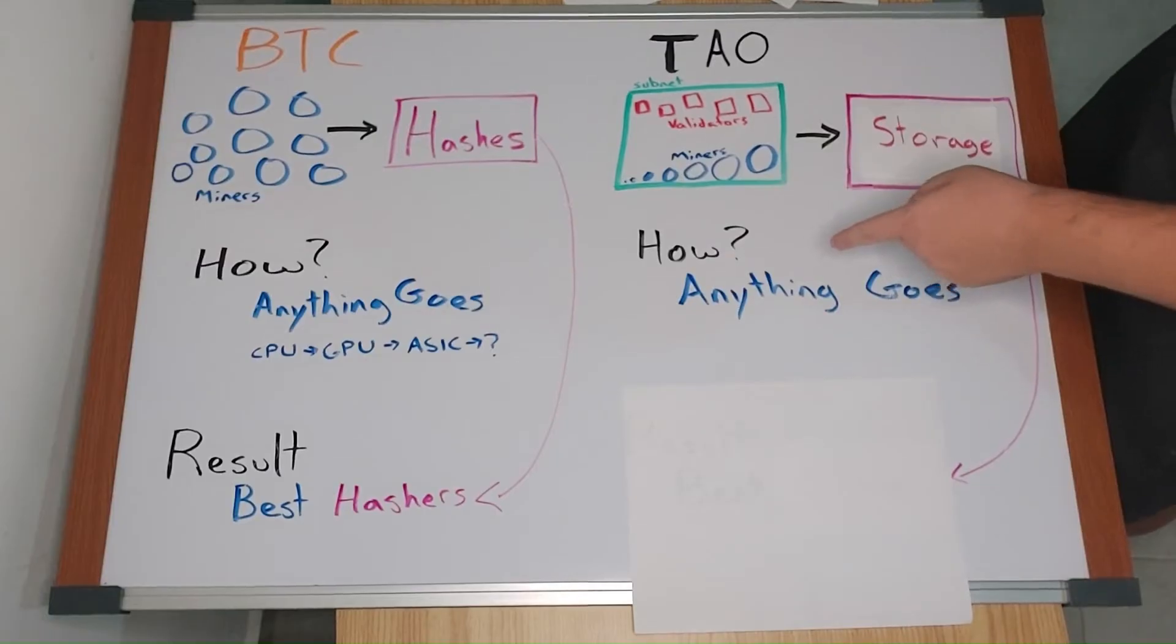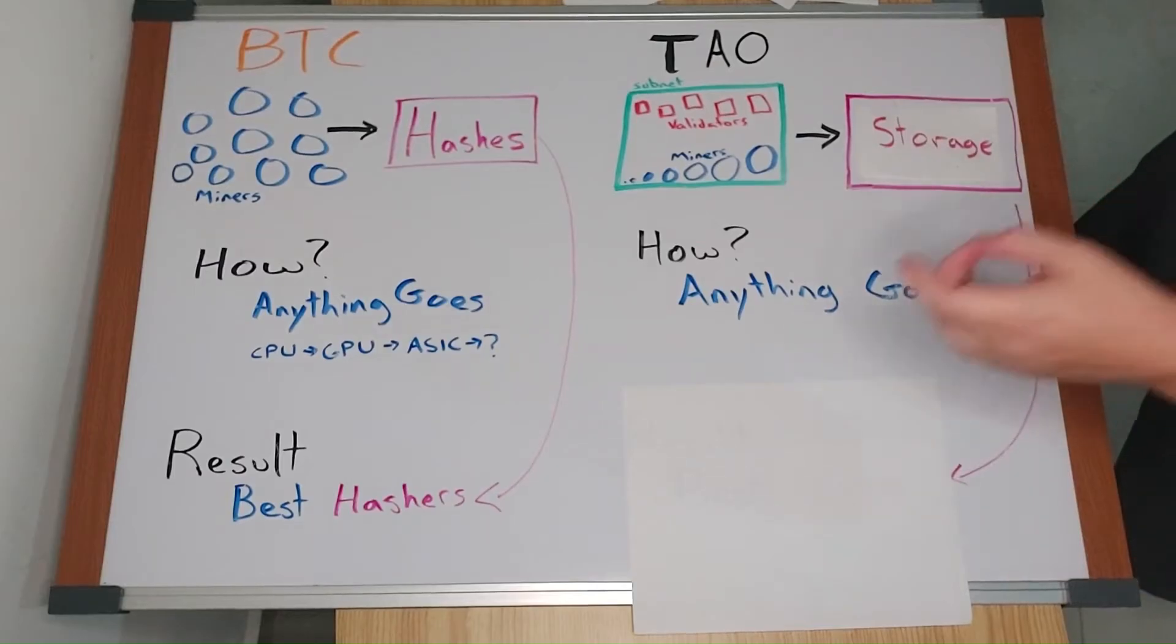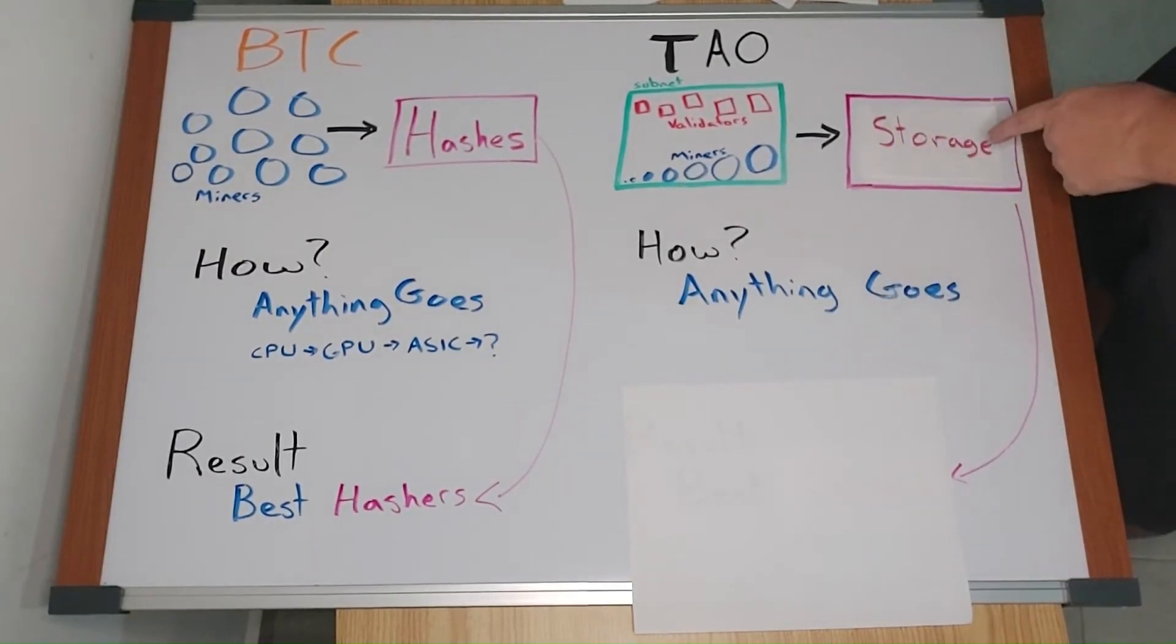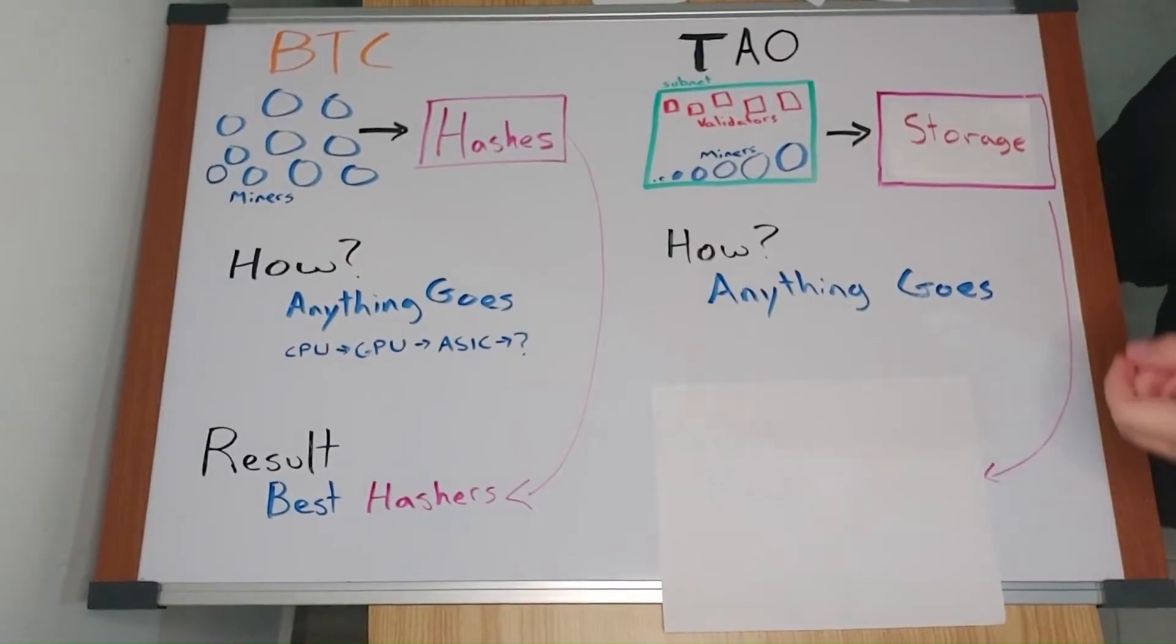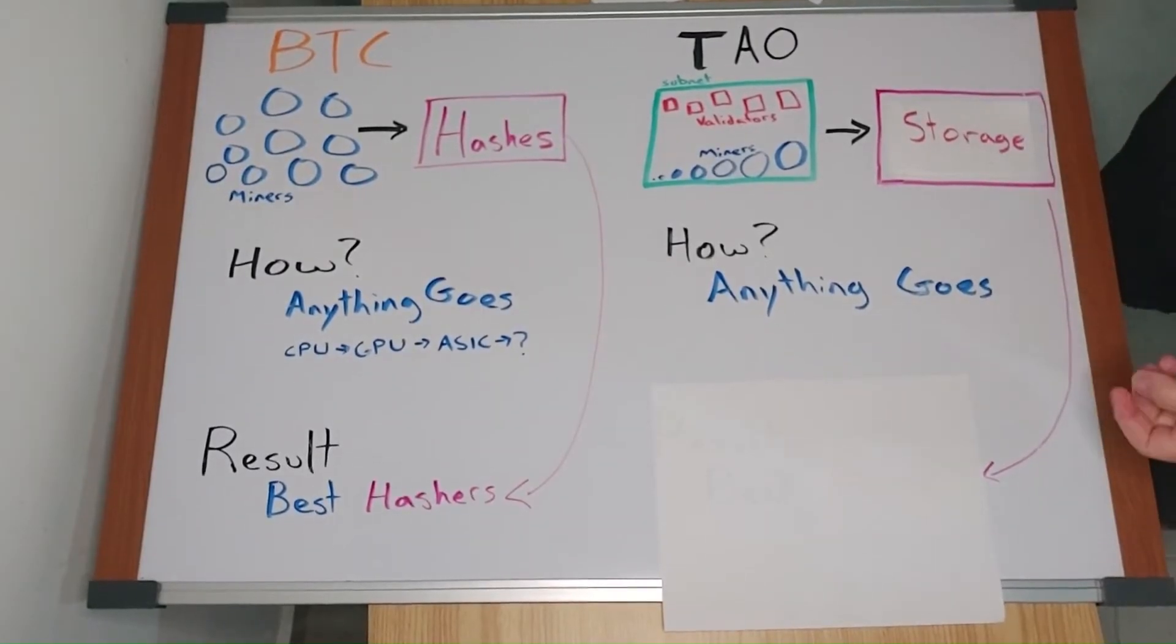Anything goes as long as it satisfies the subnet's validator code. In order for miners to get rewards, they have to be really good at providing storage. These miners are competing to find the best possible way to provide storage from anywhere in the world. Remember, BitTensor is permissionless.